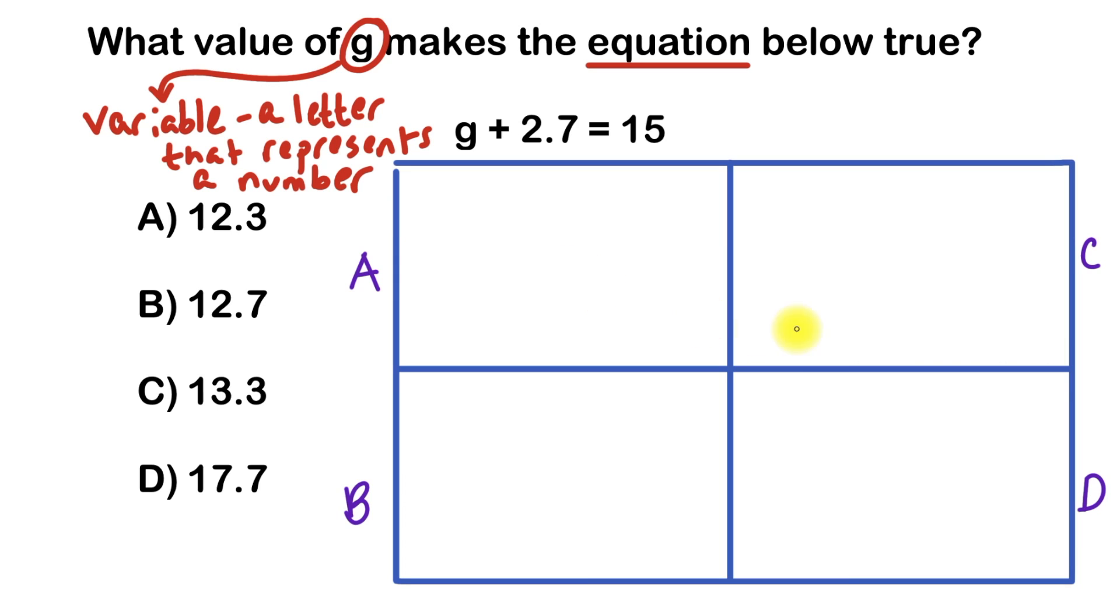So what I've done here is I've set up a little grid where I'm going to try each of these choices for this equation. So in each of these boxes, I'm going to start with G plus 2.7 equals 15.